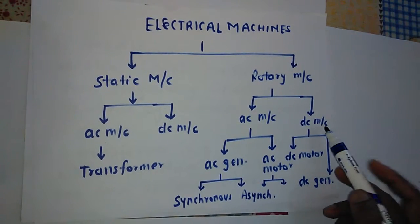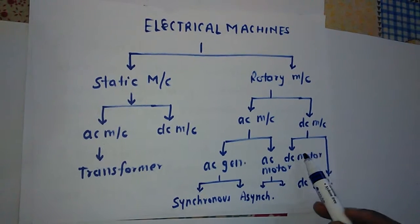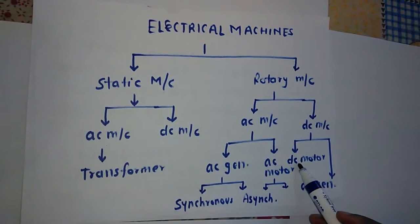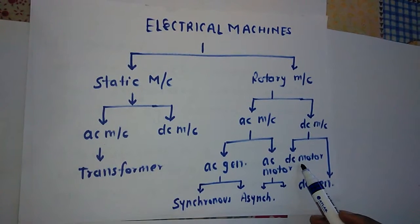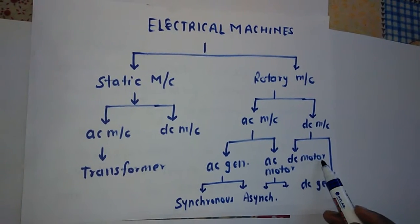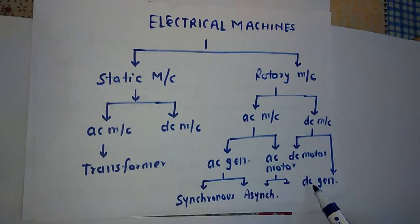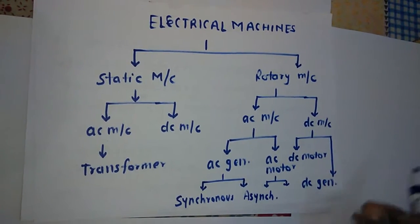Now we will see DC machines. DC machines have two components: one is DC motor and one is DC generator. The DC motor output is speed and torque, and the DC generator output is electrical voltage and electrical current.